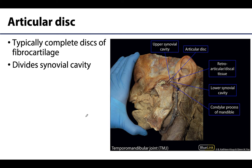Now let's cover structures not found in every synovial joint but present in more complex ones. First is the articular disc — a complete fibrocartilaginous disc located in the middle of a synovial cavity that divides it into two halves, allowing different types of movements to occur in each half. We're looking at the temporomandibular joint here; the articular disc is visible in the middle, with a space superior and inferior to it enabling different movements in the upper and lower synovial cavities.